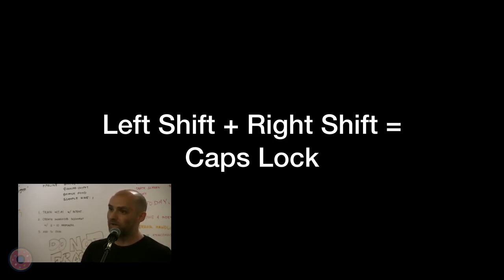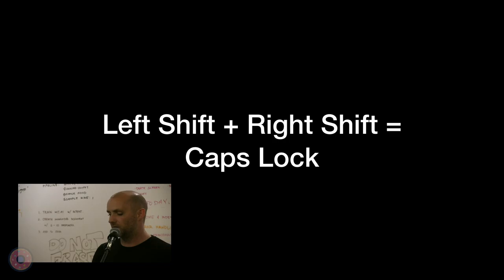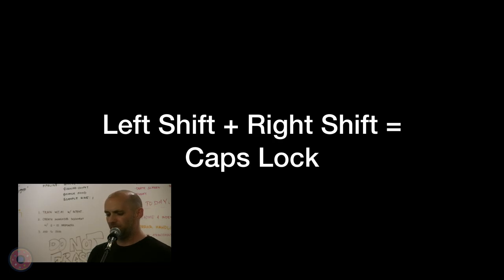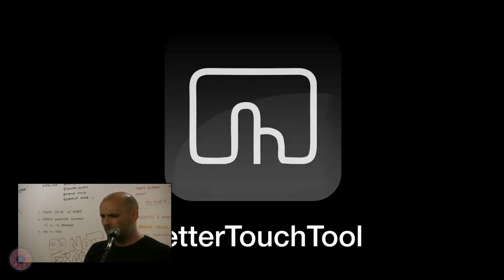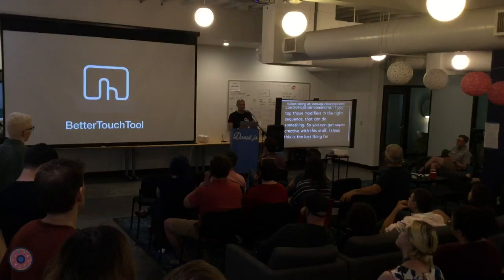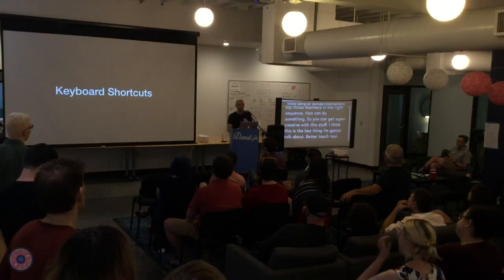You can get really creative with Carabiner. One thing I've done: since I sometimes actually do want caps lock and the key no longer works as caps lock, I've set it up so that hitting both shift keys at the same time toggles caps lock. You can really think outside the box — tapping the shift key a couple times could do something, and it could do something different depending on which application you're in. Just drumming your fingers on control, option, command in the right sequence could trigger something. You can get super creative with this stuff.